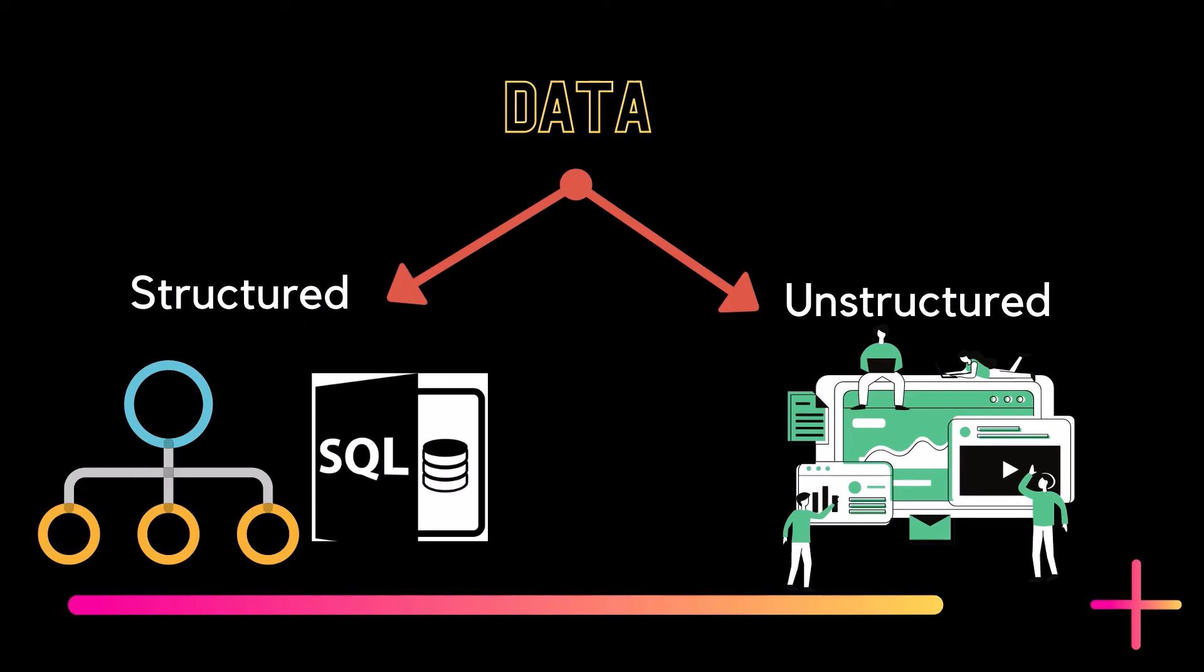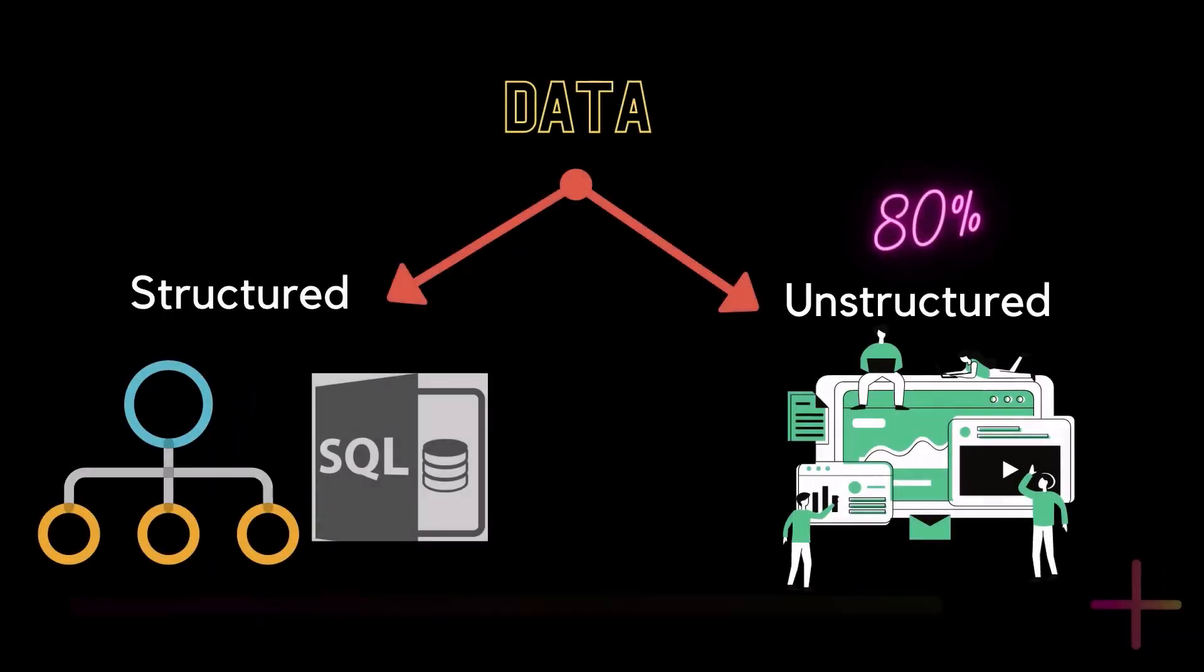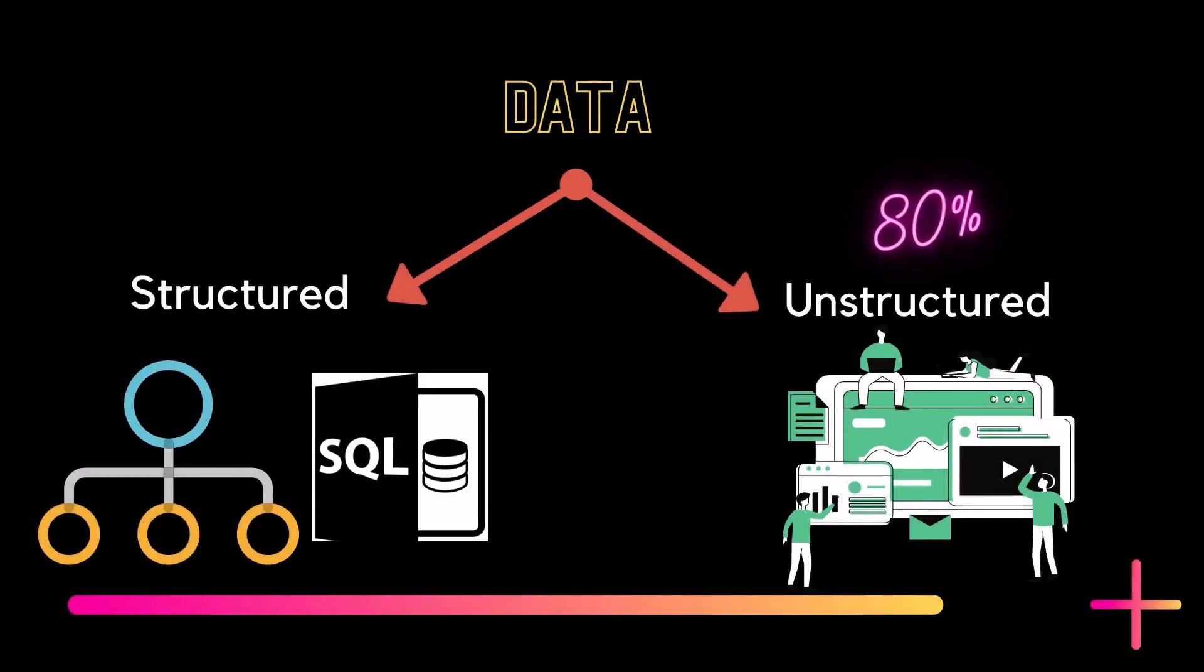Unstructured data are those that cannot be processed or categorized by conventional methods. This kind of data mainly consists of audio, text and video files. A large amount of unstructured data gets generated through the internet by each passing second. And unstructured data constitutes more than 80% of the total data generated.